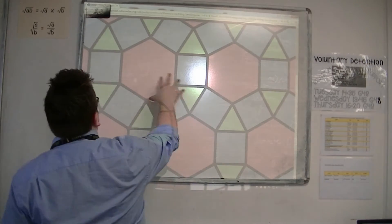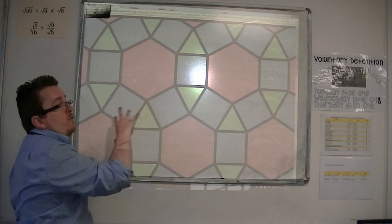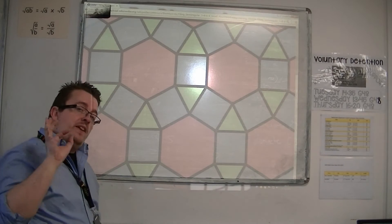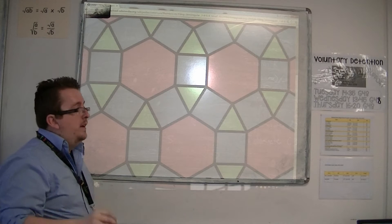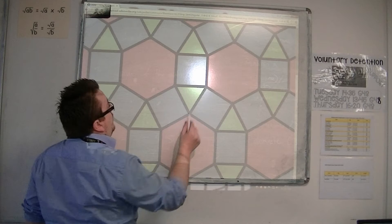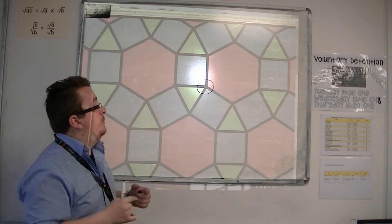So tessellation is trying to fit shapes together so that there are no gaps. And that's the key part here, no gaps whatsoever. And what's telling is if you zoom in on one of the corners of where the shapes meet.